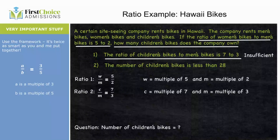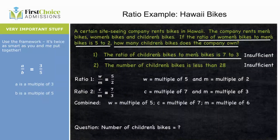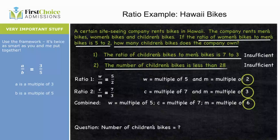Statement 2 says the number of children's bikes is less than 28 — so anywhere between 0 and 28. Also insufficient. When we combine the statements, we know w is a multiple of 5, c is a multiple of 7, and m must be a multiple of 6, because m is both a multiple of 2 and a multiple of 3.